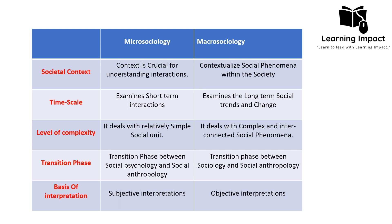Regarding level of complexity, micro sociology is relatively simple because it deals with smaller social units. Macro sociology is relatively complex because it discusses everything as a social phenomenon and studies everything in relation to society, making it interconnected and more difficult to analyze.